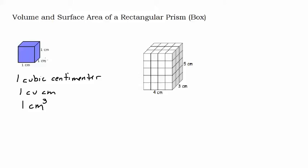It doesn't have to be in the shape of a perfect cube to represent the volume of a cubic centimeter. If we filled this cubic centimeter with water, we would have a cubic centimeter of water, and we could pour that water into any shape and it would still be a cubic centimeter of water. For our purpose here, we are going to be using these cubes because everything's rectangular. But if you were doing the volume of a cylinder, you could still measure it in cubic centimeters even though it's not rectangular.